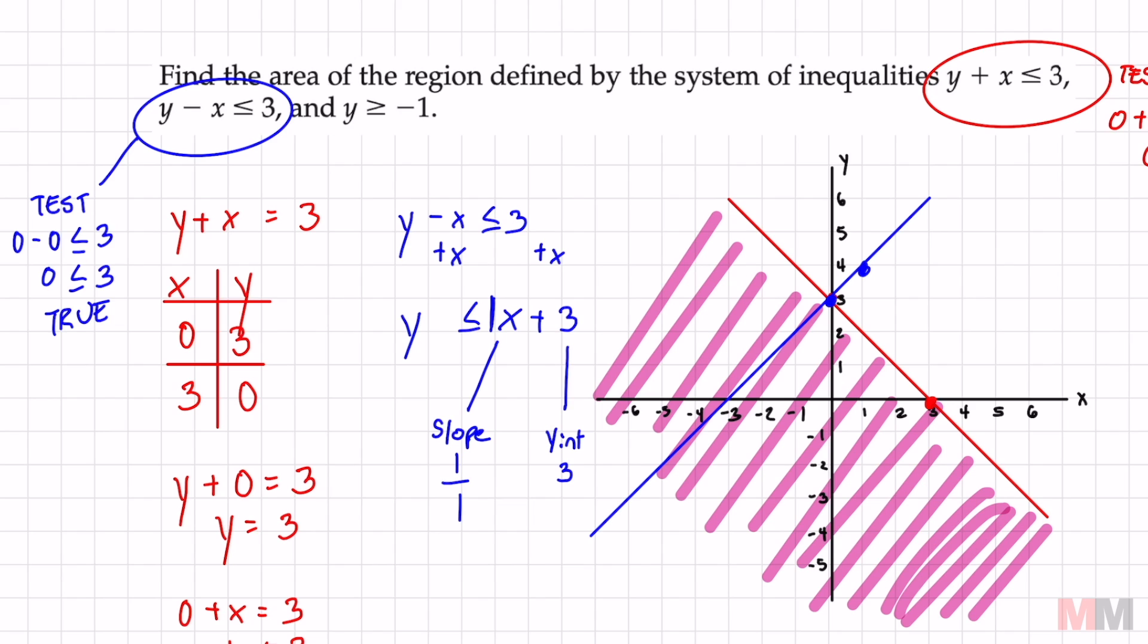So that means that for that blue graph I'm going to shade the side that has zero in it. And you can kind of see that area that they have in common so far.